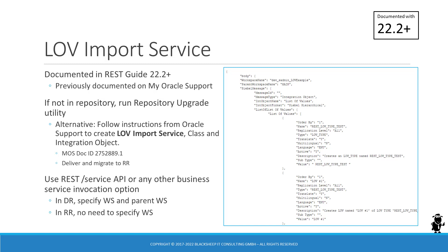In late 2021, the LOV import service has been added to the master repository, so customers who conduct an upgrade from pre-IP17 versions to current releases will have it merged into their custom repository. The same is true for customers who run the non-mandatory repository upgrade utility, which can be used during an update from IP17 or higher. Once the LOV import service is established in your repository, you can follow the documentation in the REST API guide 22.2 or higher. It's worth noting that while documented as part of the REST API, the LOV import service is a regular business service and as such can be invoked not only via a REST call but by any known technique to invoke a business service method.